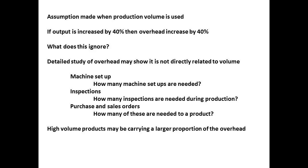For one business, it may be setups. If machinery has to be set up before a production run, then the number of setups can be significant. Suppose that product A requires five setups and product B requires only two setups, and that setup is the most expensive part of overhead. Allocation based on direct labour may miss this completely.